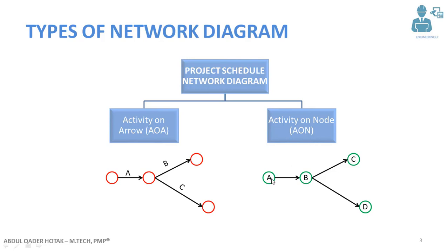In activity on node, the activity and the related information are shown in the nodes. As you can see here, activity A is shown in node A, and B, C, and D similarly. The length of the arrow has nothing to do with the duration of the activity — it only represents the relationship between the two activities.